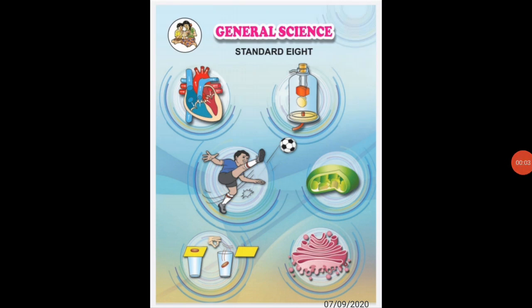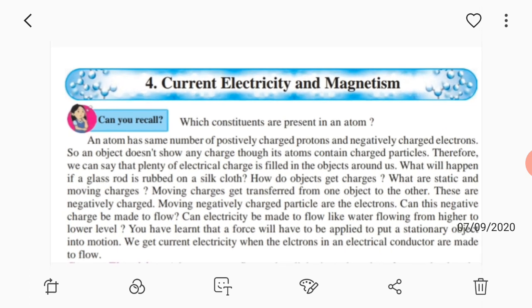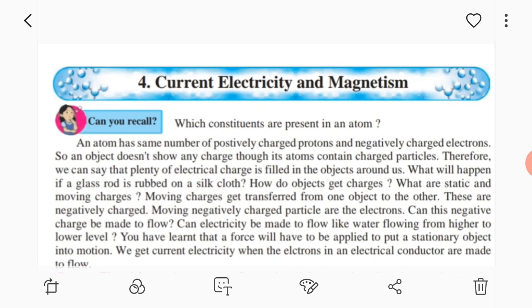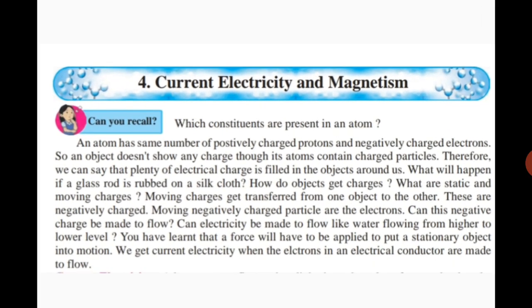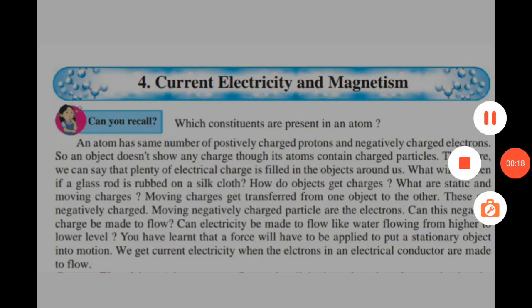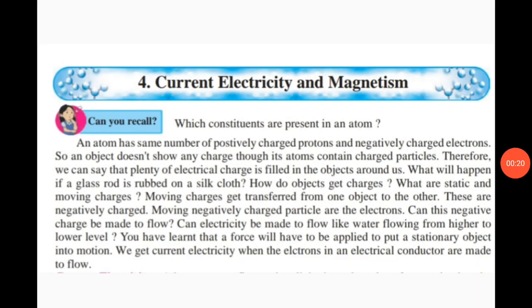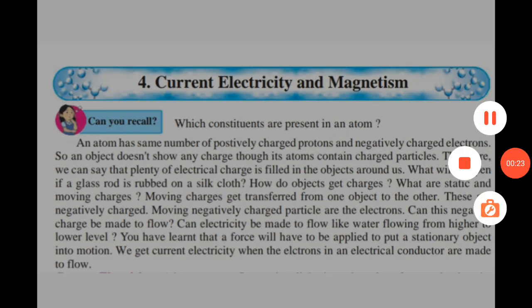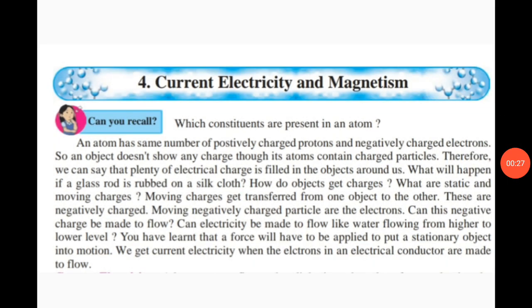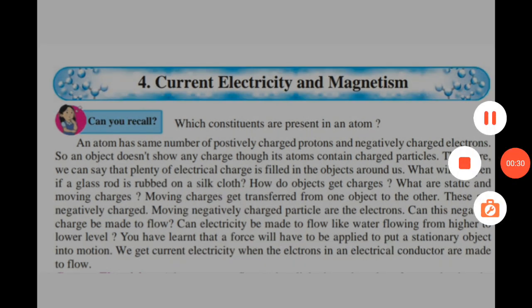Students, today we are going to see the fourth lesson of our science. The name of the fourth lesson is Current Electricity and Magnetism. In the last standard, we studied the constituents of atom, so tell me: which are the main constituents of atom?